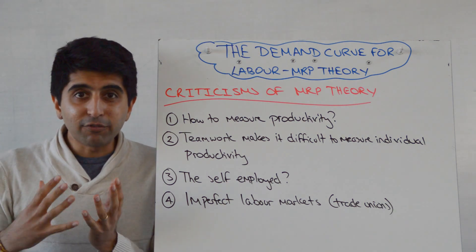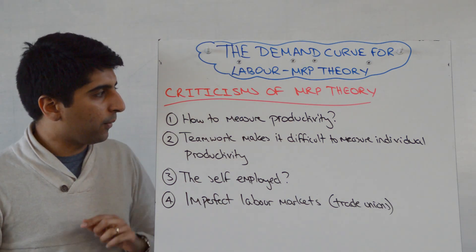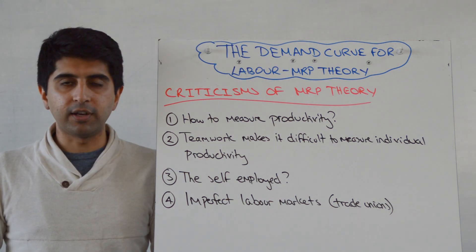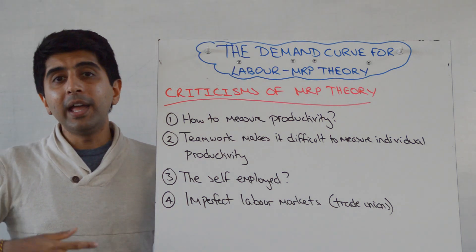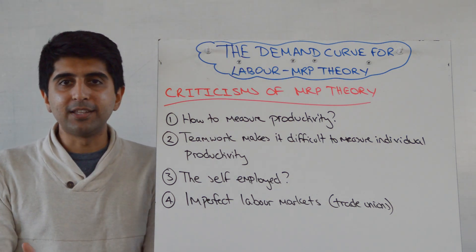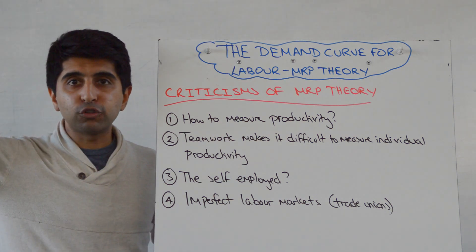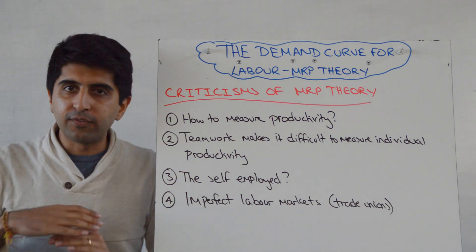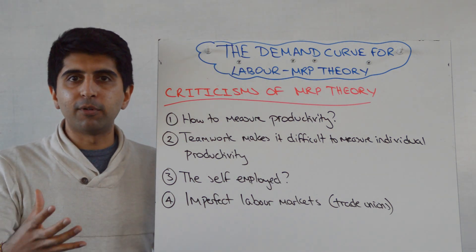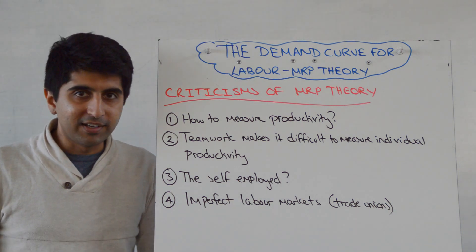The problem with that idea is that in the real world it can break down, because knowledge of MRP is a key assumption we made. Productivity might be very difficult to measure in certain industries. Take the teaching profession — it's very difficult to measure the productivity of teachers because the output they produce is not marketed, there is no price for it. So to work out the MRP of teachers is very difficult, and therefore for schools to know the number of workers to employ at a given wage rate is very difficult, even impossible.